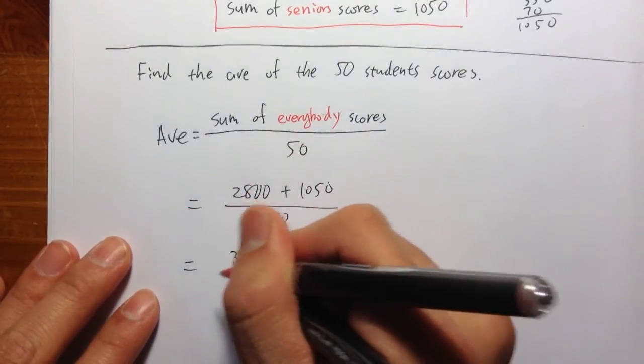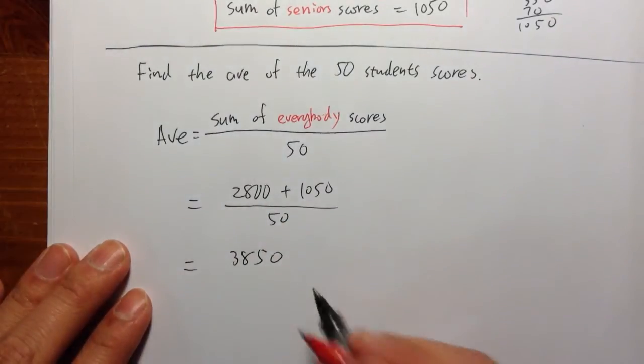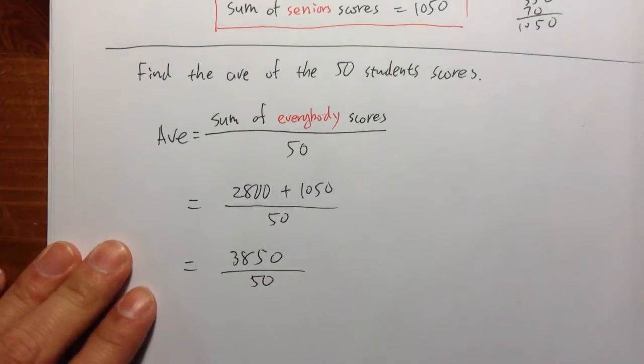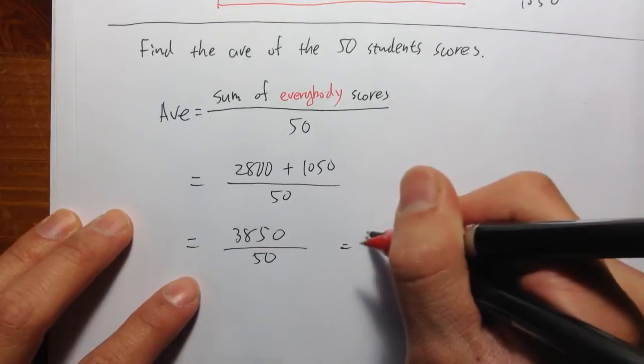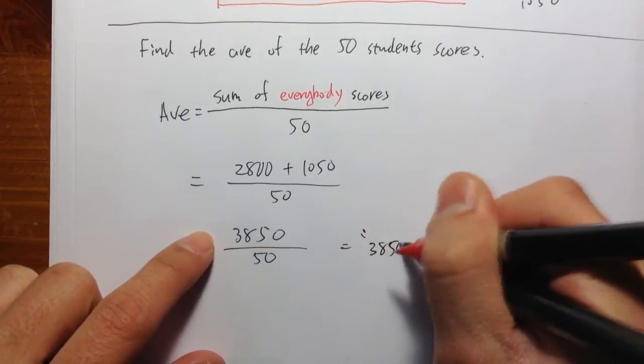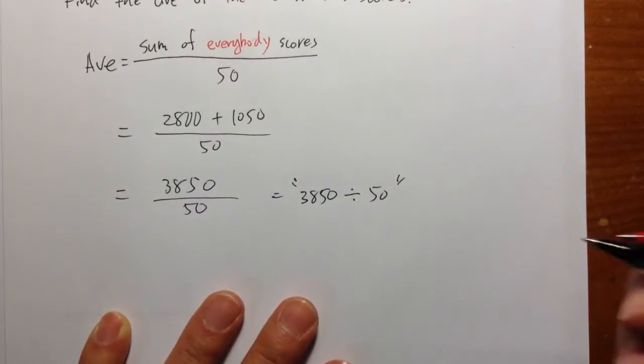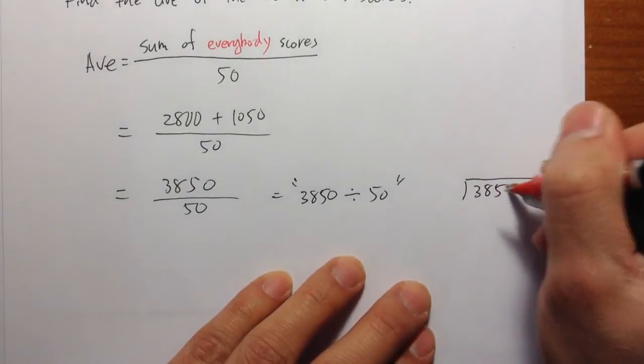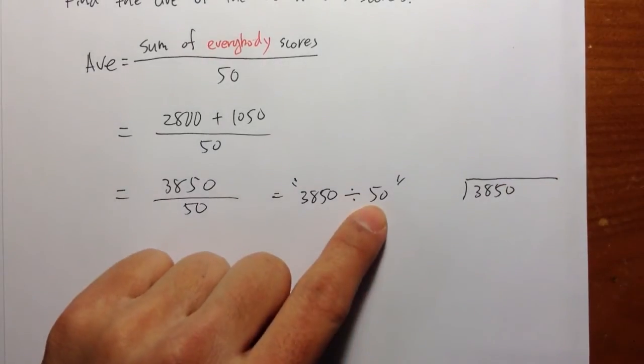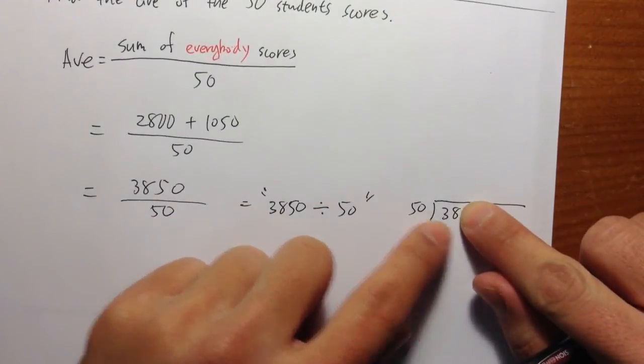So on the top, I get 3850, so 2800 plus 1050, you get 3850, divided by 50. So this means, so let me do this on the side, this means 3850 divided by 50. So again, I'm going to work out the calculation, I'm going to use long division. 3850 is the first number, so it goes inside, 3850. And 50 is the second number, it goes on the outside.